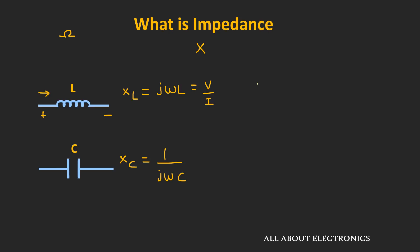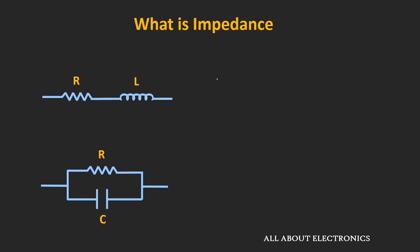If we consider only the magnitude of the reactance, then for inductive reactance it will be equal to ωL, and for capacitive reactance it will be equal to 1 divided by ωC. As you can see, these inductive and capacitive reactances are frequency dependent — with frequency, the value of this reactance will change. Now, if your circuit contains both a resistive element and a reactive element, then the total resistance offered by the circuit is known as the impedance, and it is denoted by the symbol Z.